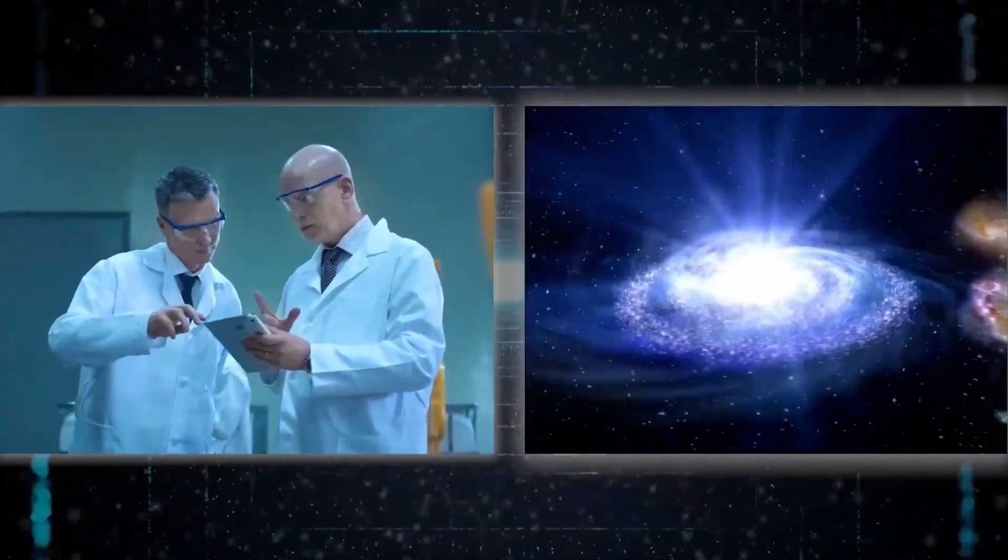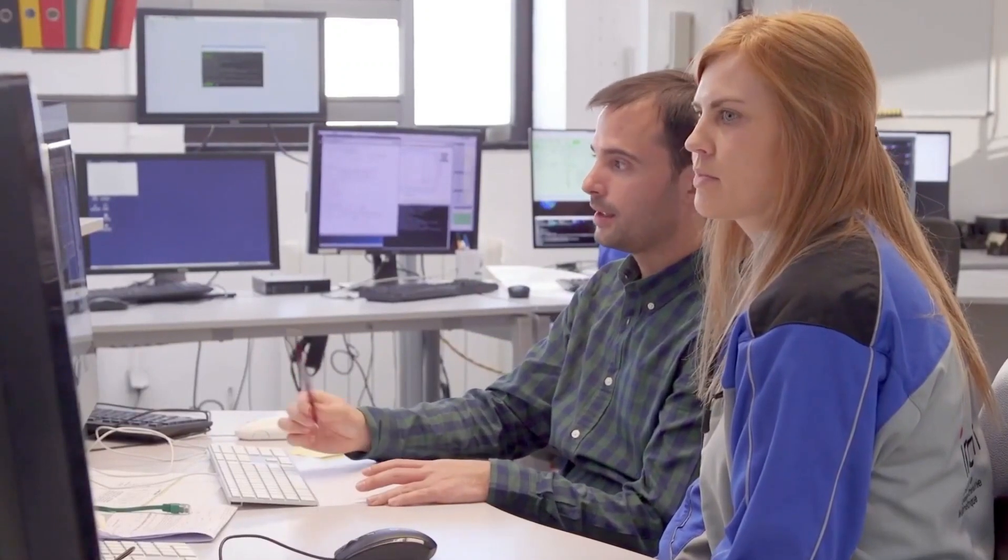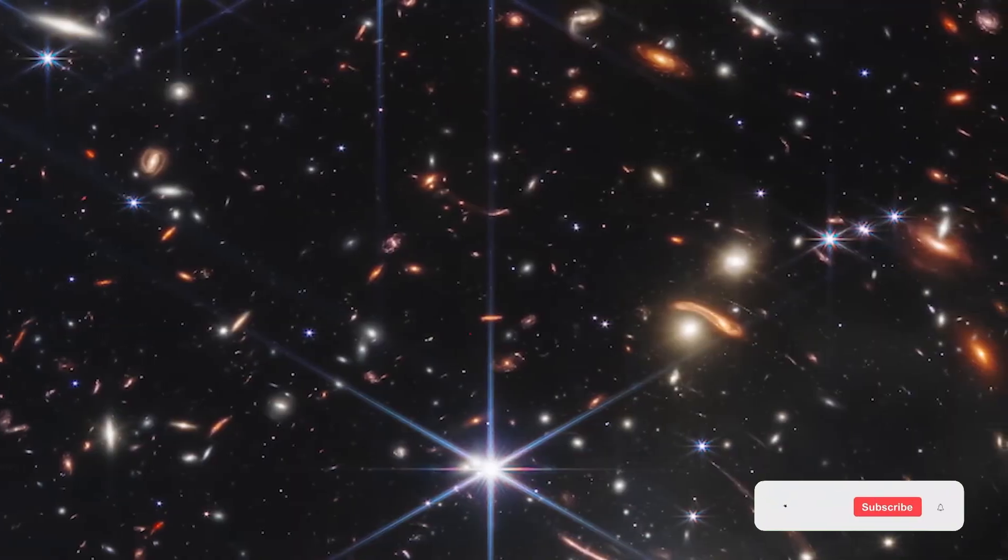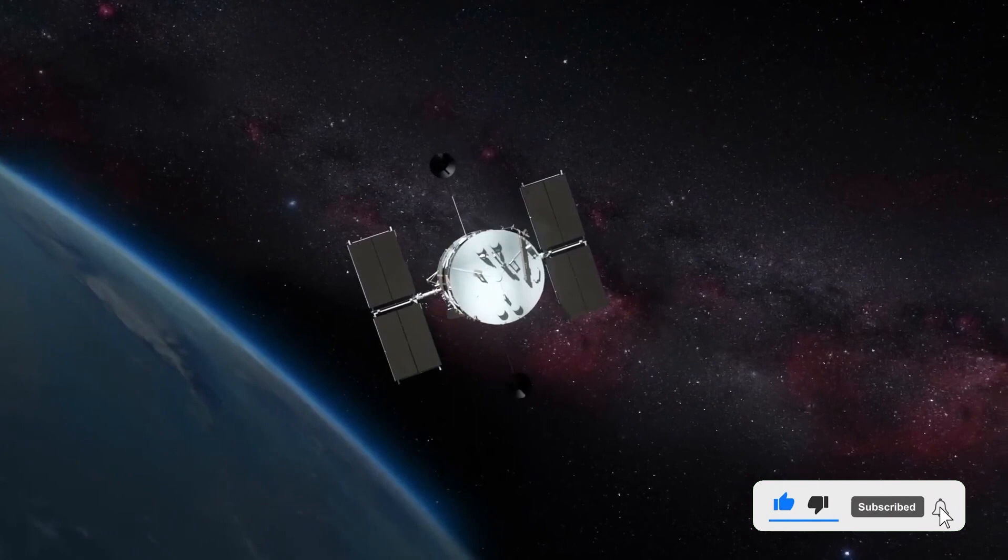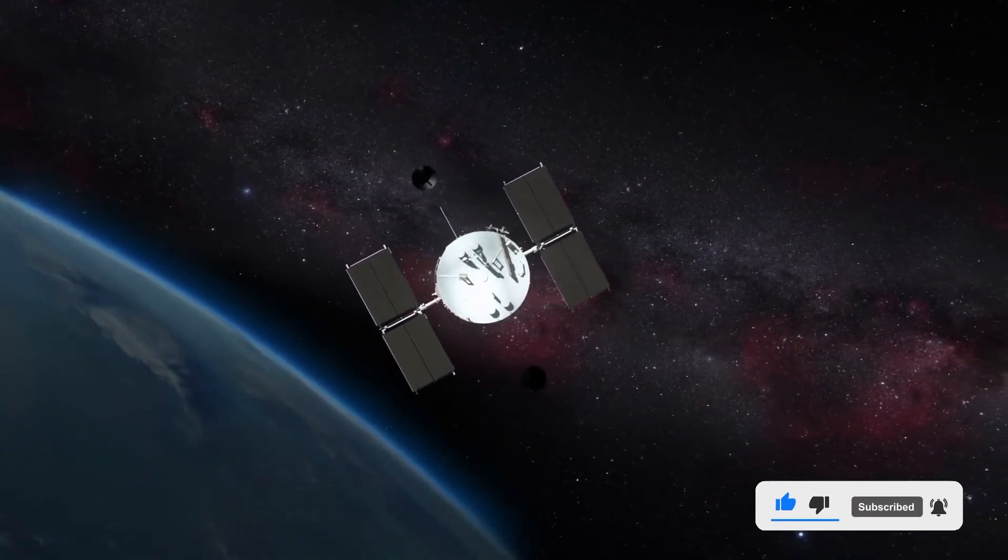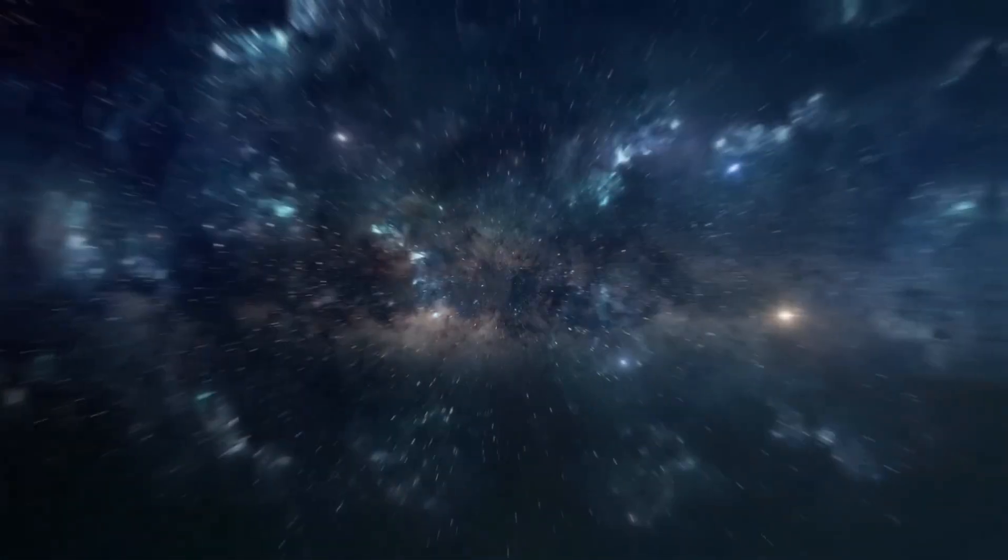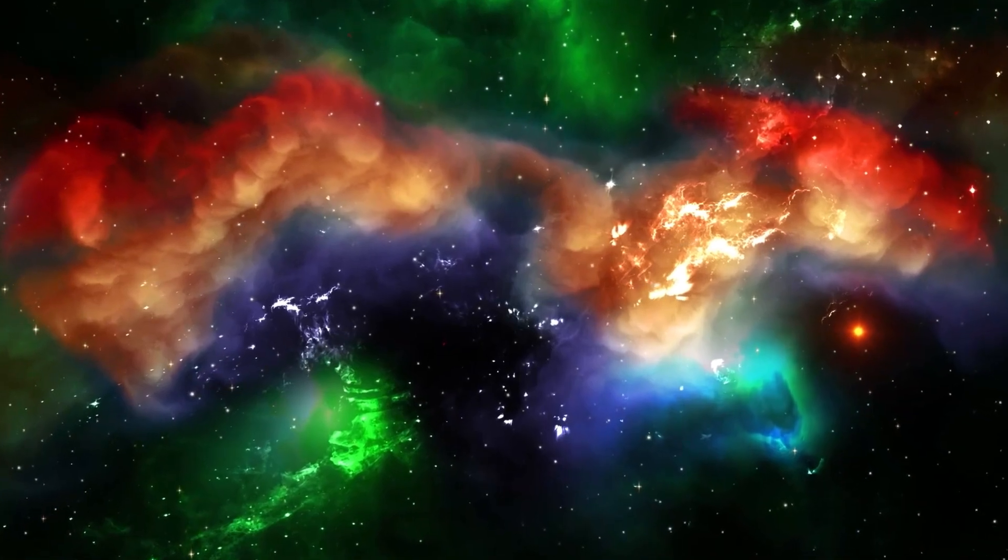One of the remarkable achievements announced by the James Webb Telescope is the capture of light from the SMAC's 0723 galaxy cluster, situated 5.12 billion light-years away in the southern part of the Pisces constellation. This cluster offers a glimpse into the universe's structure when it was just 600 million years old, challenging existing theories about cosmic evolution.